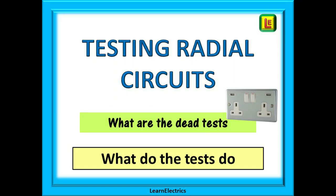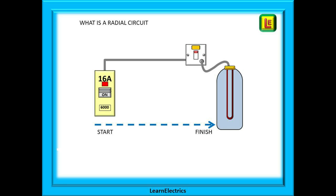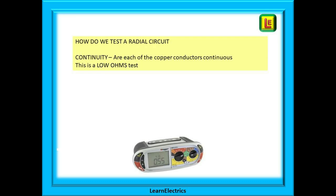We've had lots of requests at Linelectrics for a video on what we are actually testing with radial circuits — be they radial socket circuits, lighting circuits, cookers, or showers. In this video we will look at what each of the dead tests is achieving for us, and why we do the test a certain way and the results we are expecting to see. Let's begin by looking at a radial circuit. We've shown here a water heater circuit, but it could just as easily be a cooker or a shower. The cable leaves the consumer unit and when it gets to the water heater it stops — that is the end of its journey, and that is a radial circuit. We will look at the three main dead tests that we should apply to this cable.